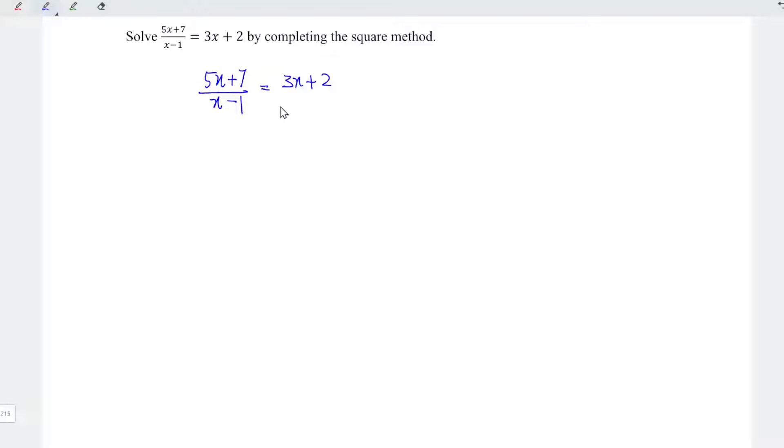Firstly, let's convert the equation to quadratic equation. To do so, we can apply cross multiplication, which means that we should have 1 times 5x plus 7 is equal to x minus 1 times 3x plus 2.